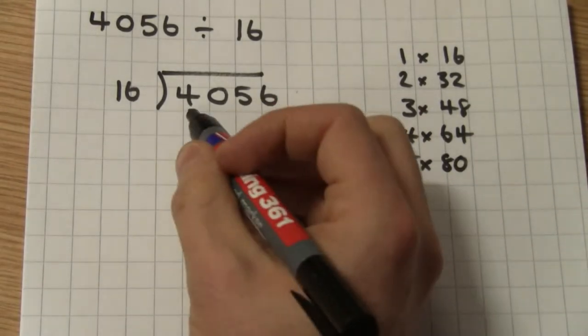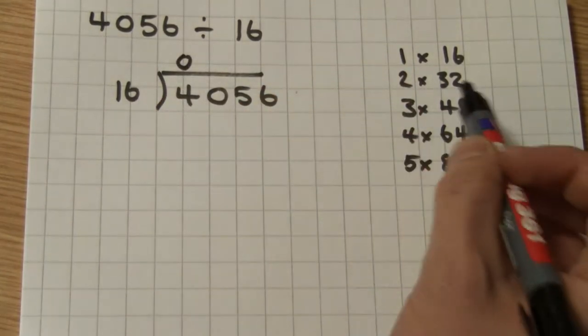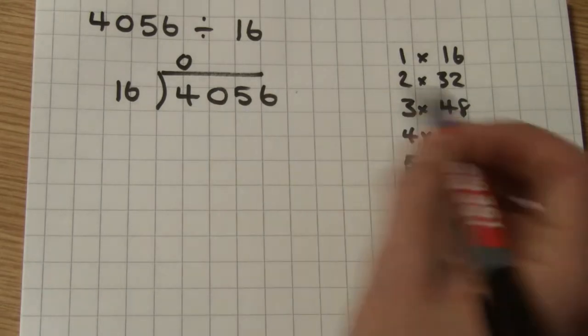OK, here we go. 16 into 4 doesn't go. 16 into 40. Now, we know this goes twice because two 16s are 32.